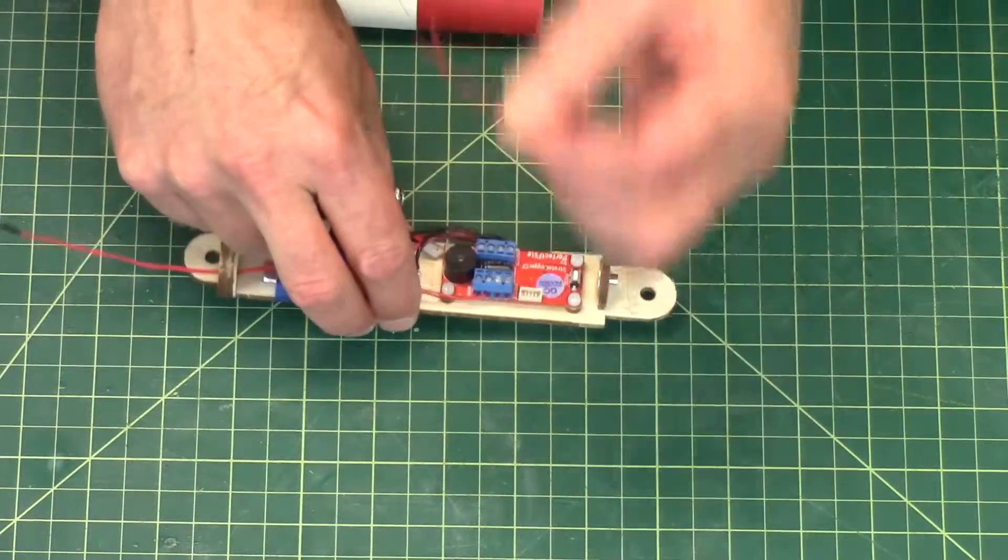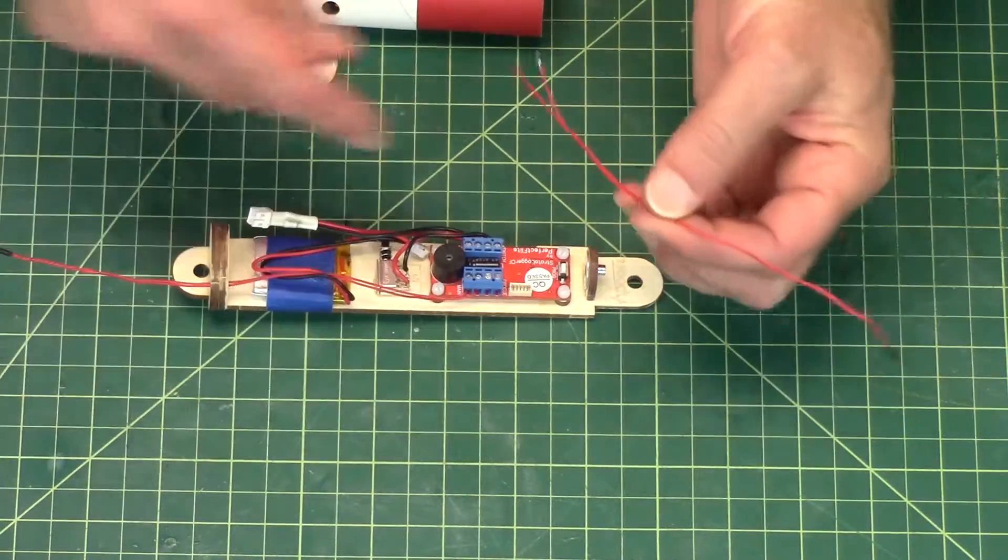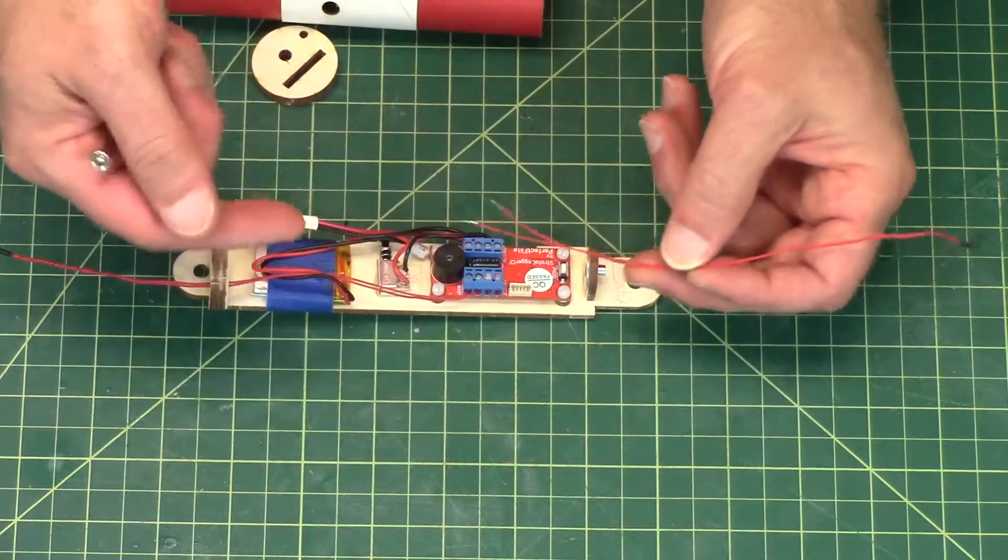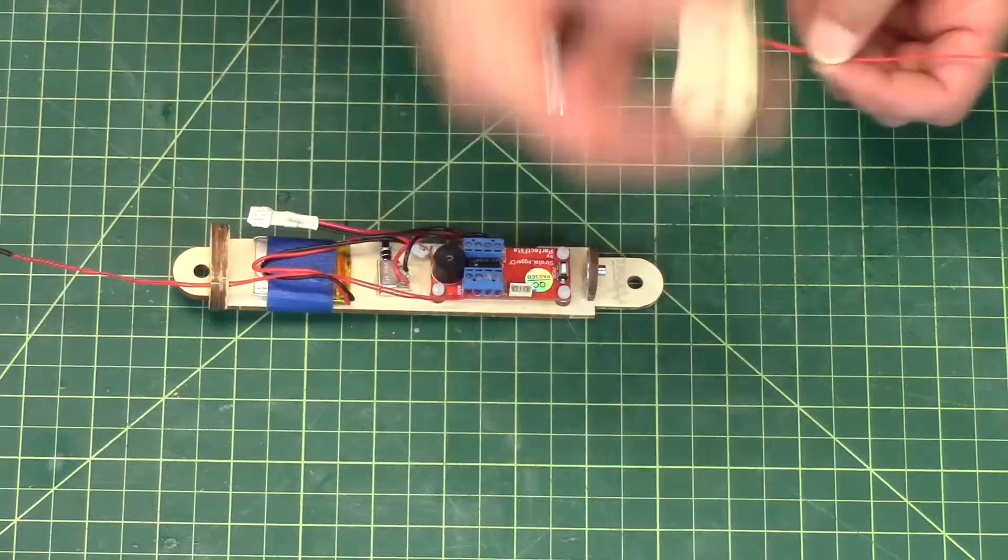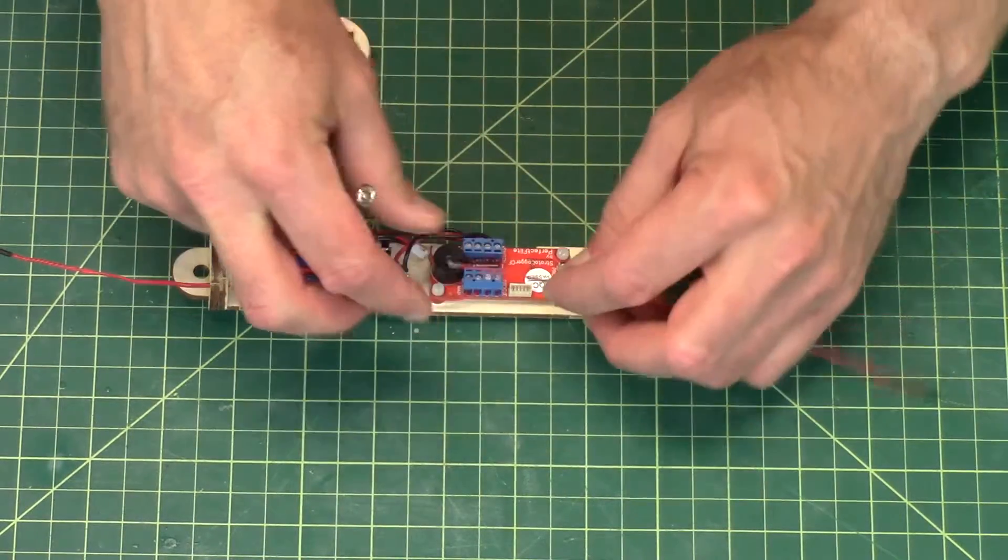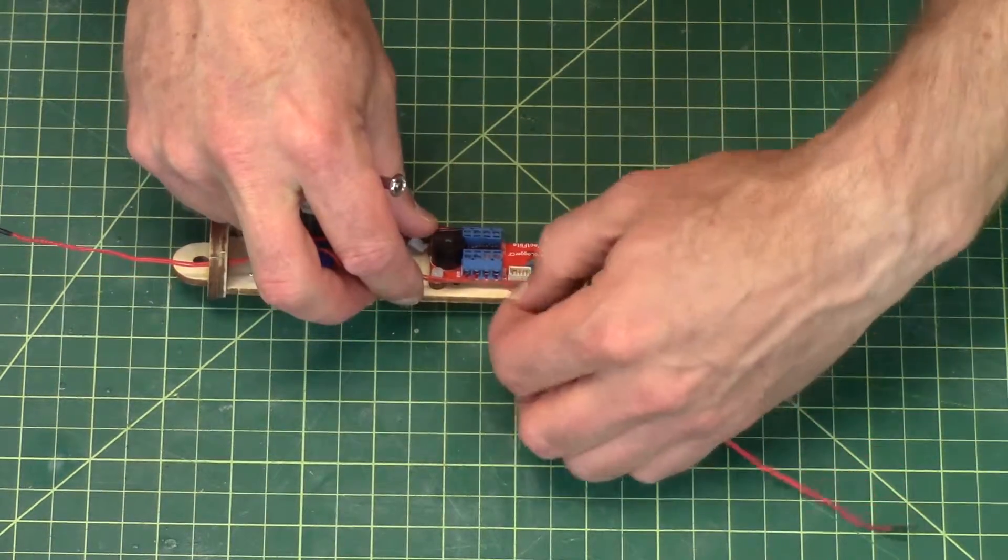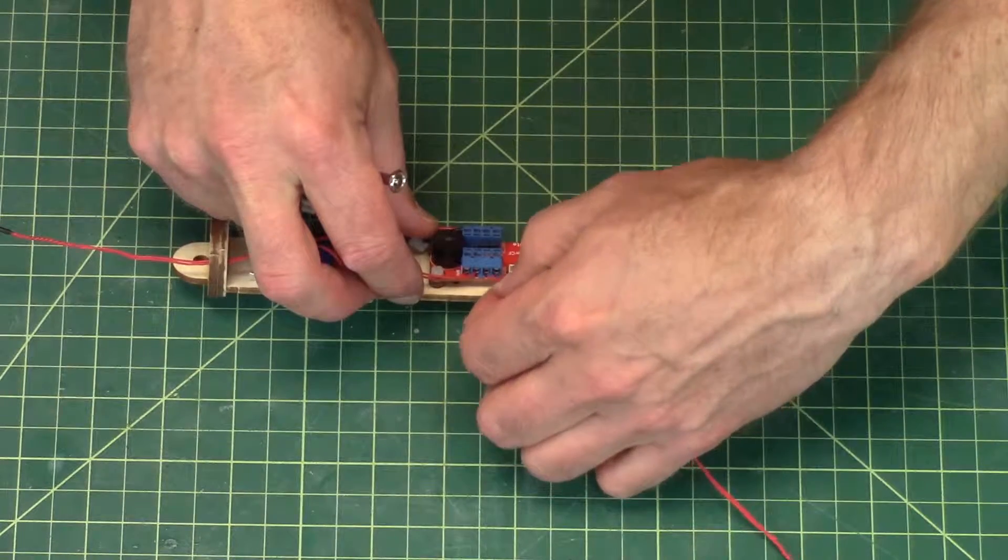Now the drogue parachute, or the drogue deployment charge, that one's going to go out the bottom. And right now the bulkhead is not on so I don't have to really worry about where it's being routed. But it goes into the drogue terminals on the terminal block.